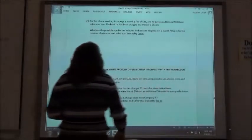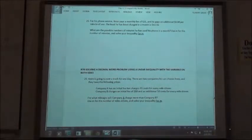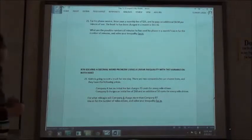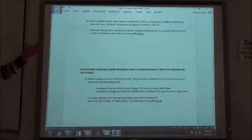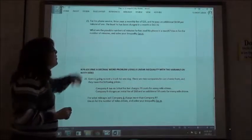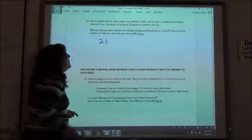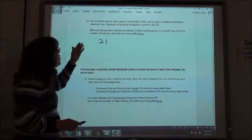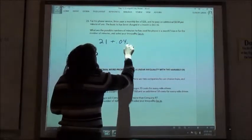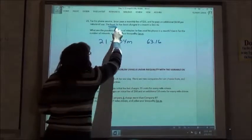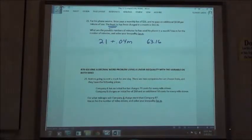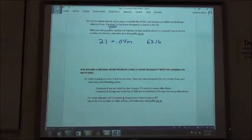21 then. For his phone service, Brian pays a monthly fee of $21. He pays an additional $0.04 per minute of use. The least he has been charged in a month is $63.16. So here's back to those ones where we had all those inequalities where you just had to write what inequality sign went in there. The least he has been charged is $63.16. So if $63.16 is the least he's been charged, what inequality sign should I put in between those two things?